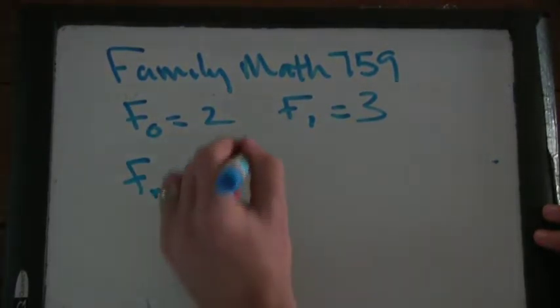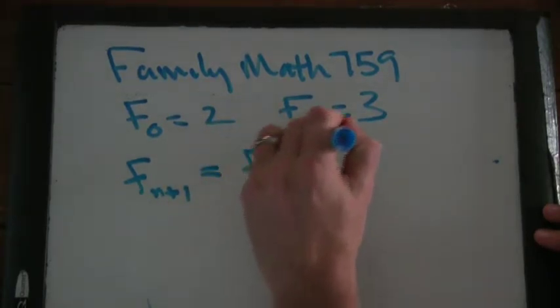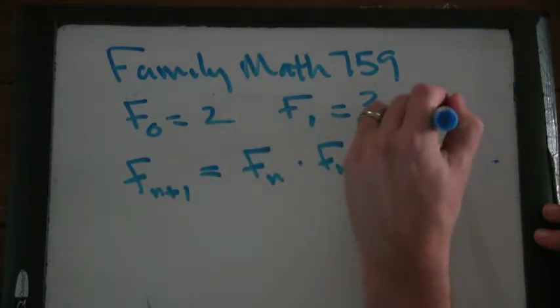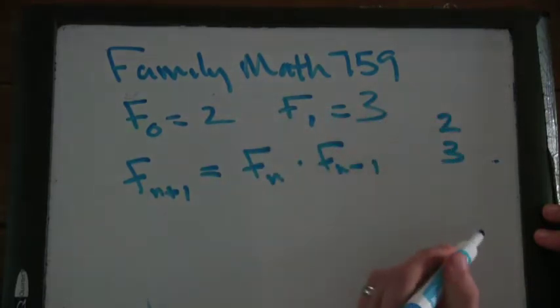Uh, F of n times F of fn minus 1. Okay, and so your sequence is going to start with a 2 and then a 3, and then what's the next one going to be?